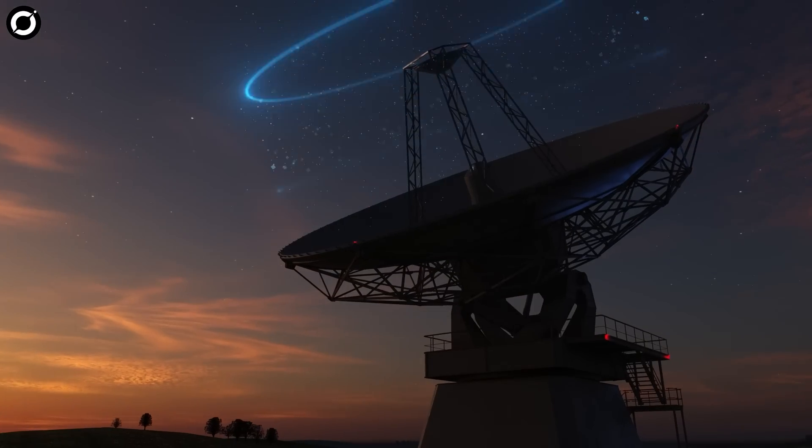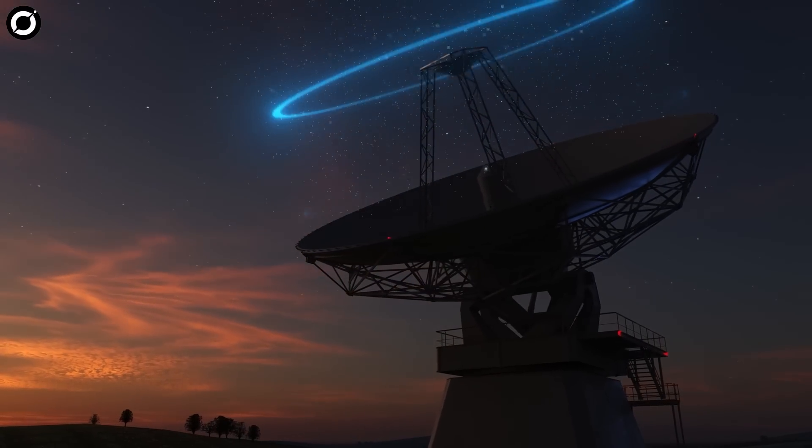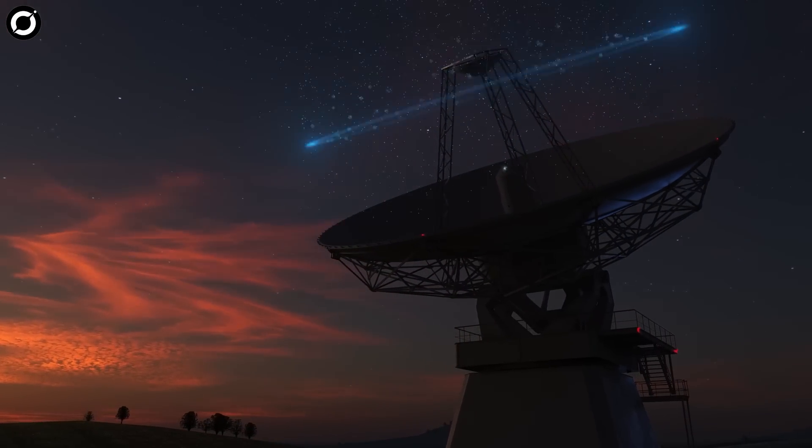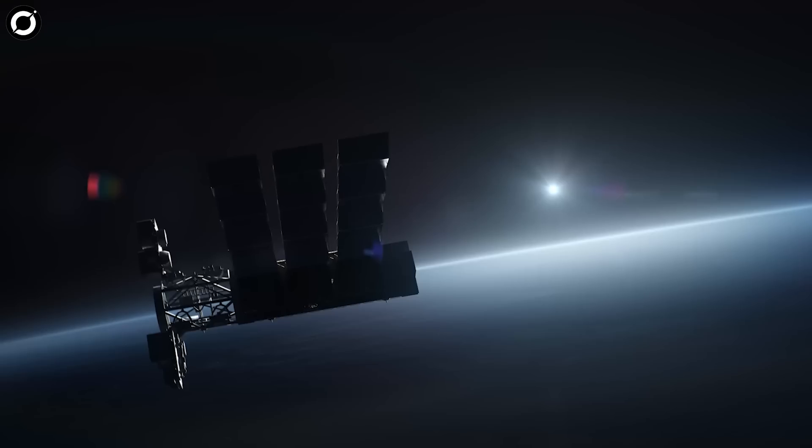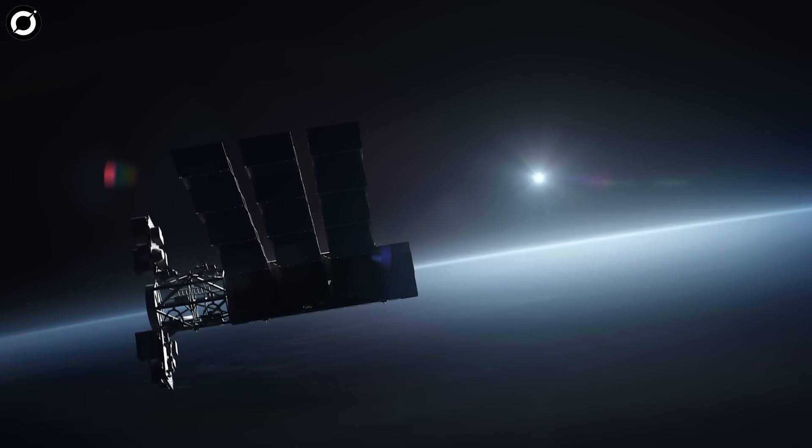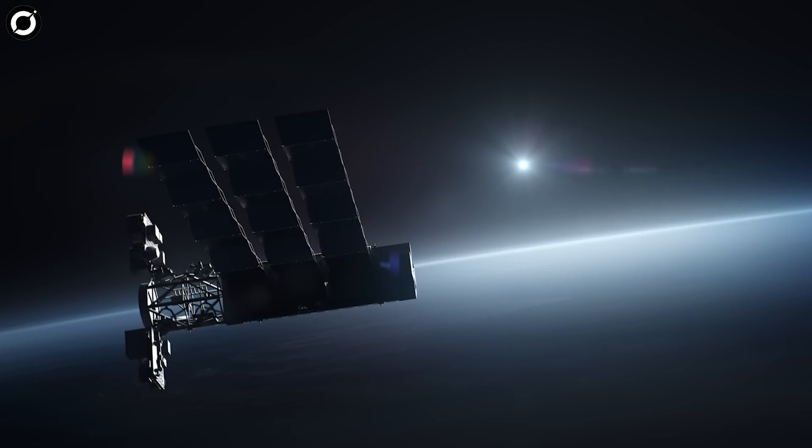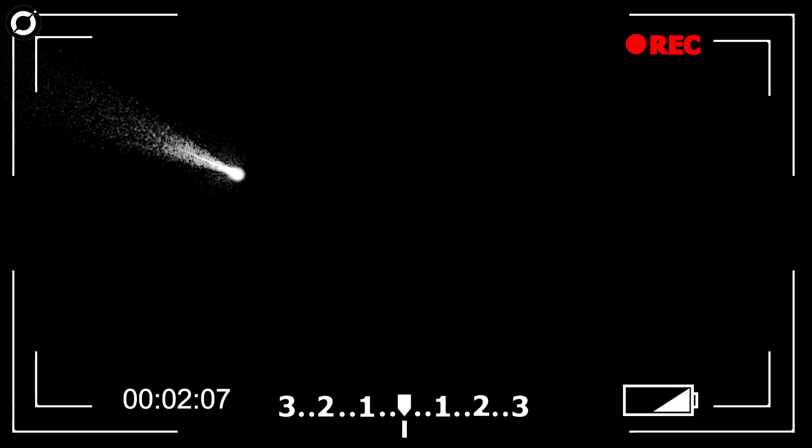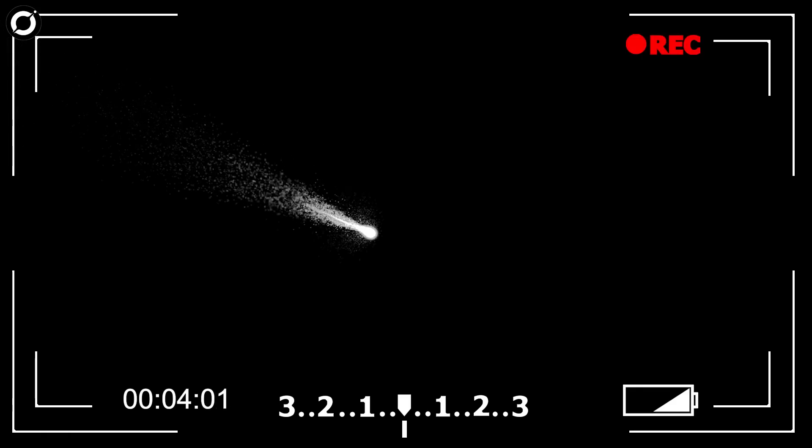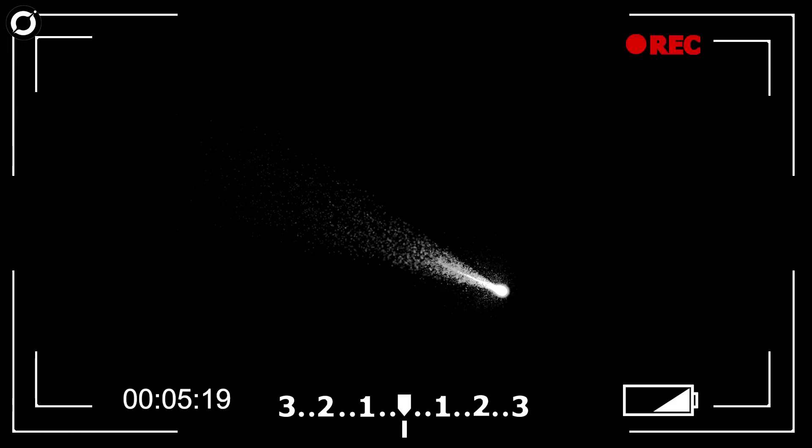But if no one was tracking it, then how do we know it was coming at us at such a high speed? Sensors on a classified US government satellite, designed to detect foreign missile launches, were the sole known witnesses to the fireball. When scientists calculated its trajectory and speed, they realized that it had come from interstellar space.